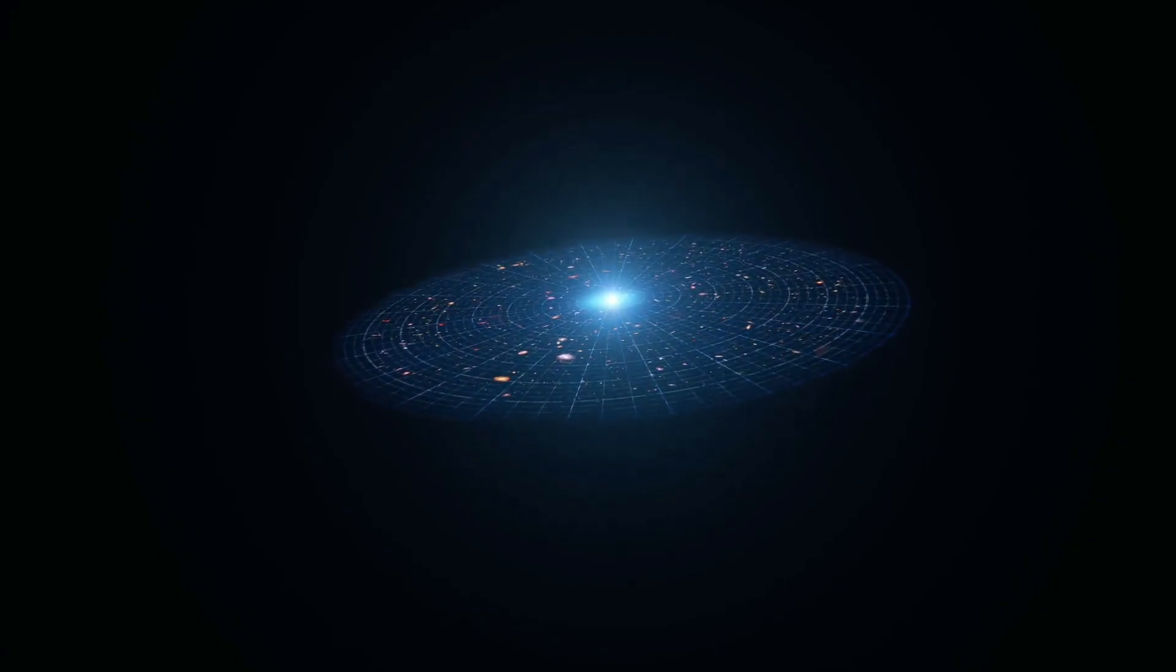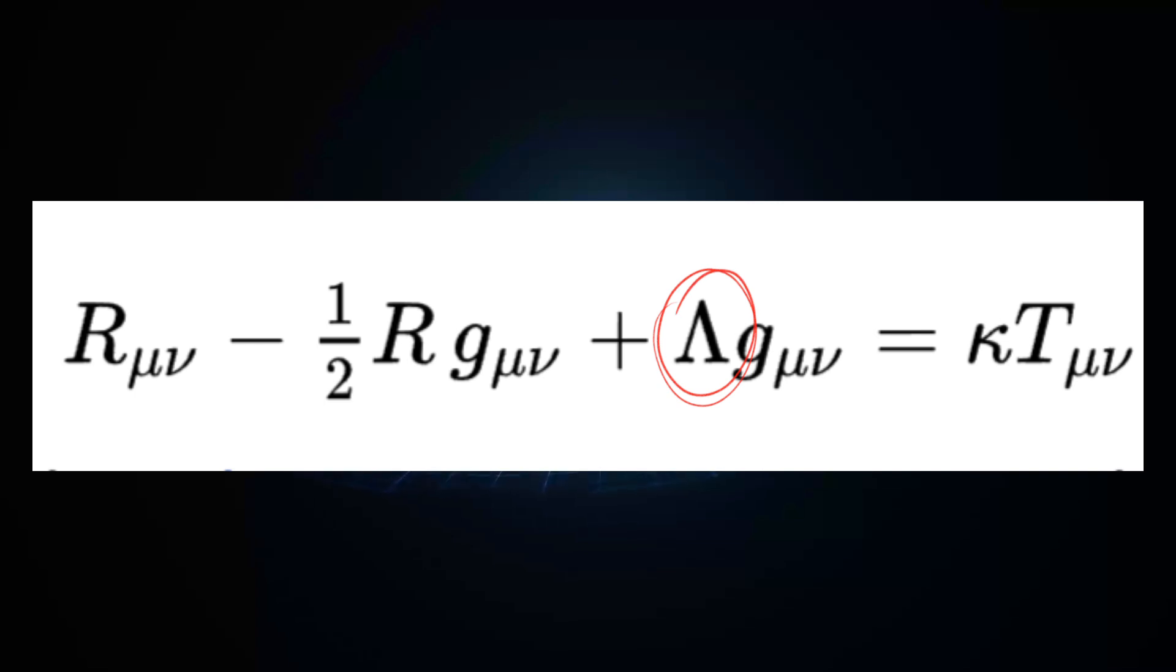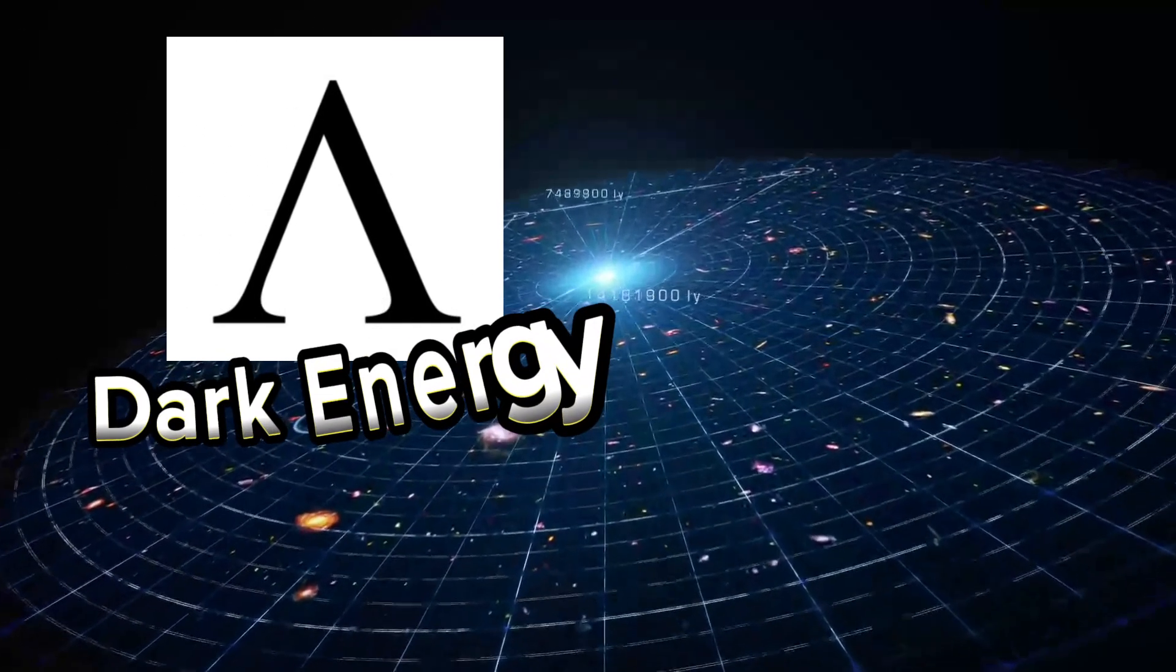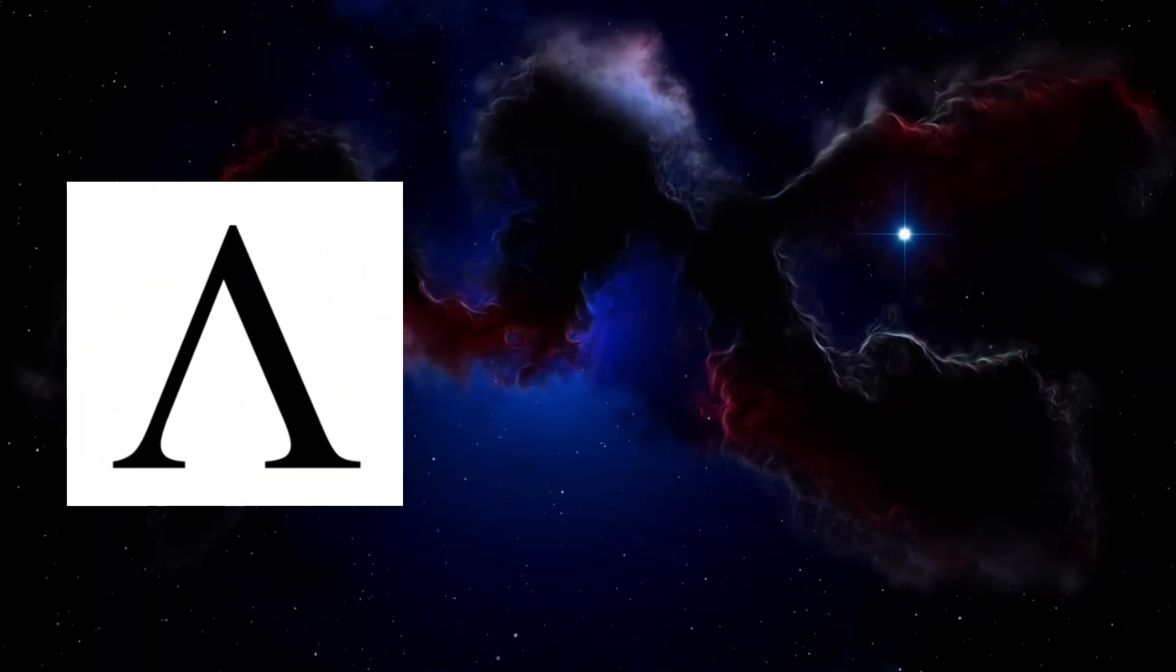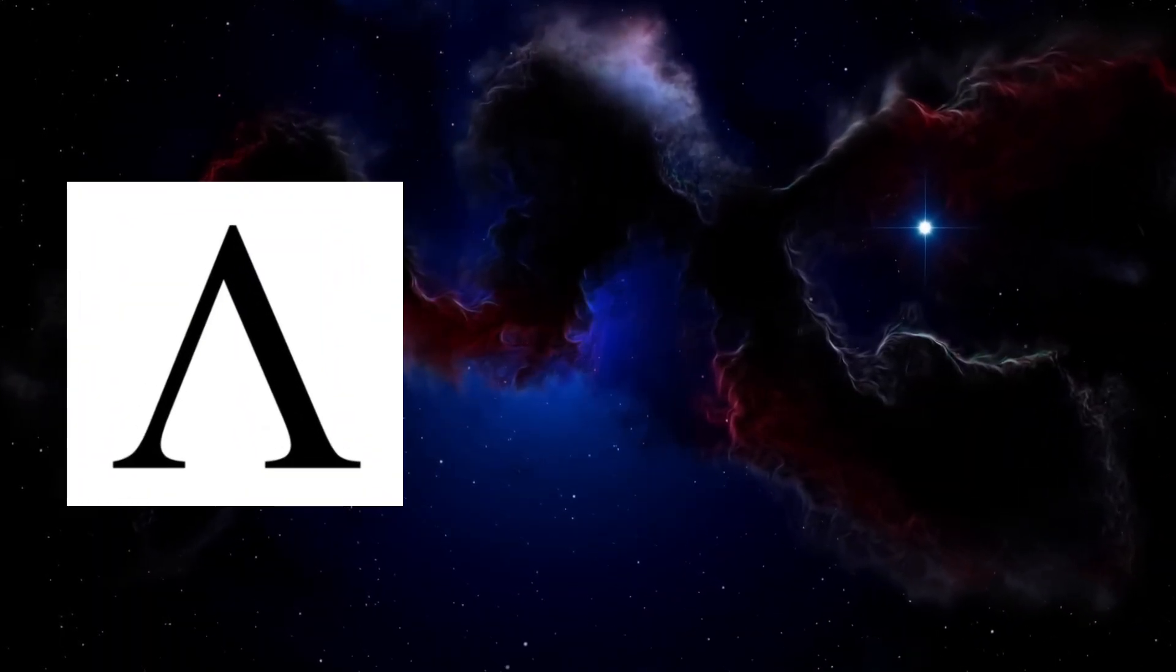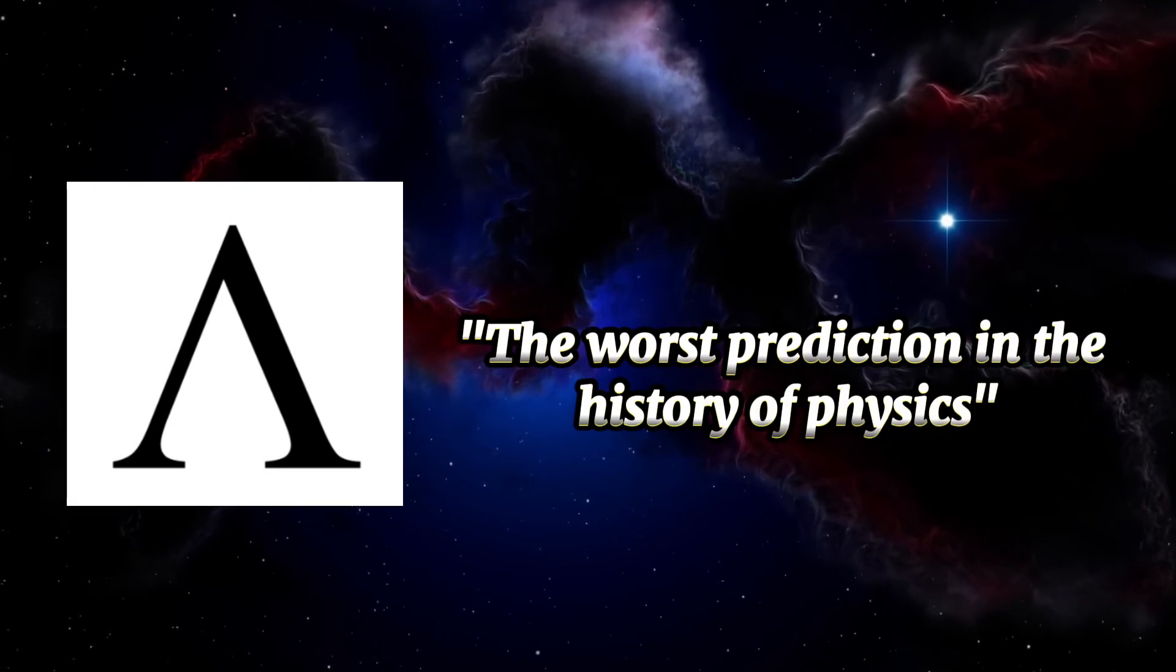Well, the whole problem with the age of the universe lies in the cosmological constant, which is basically dark energy, and we don't know enough about this mysterious force. The cosmological constant has therefore been described as the worst prediction in the history of physics.